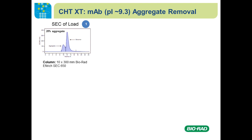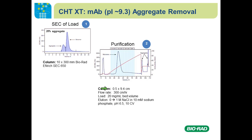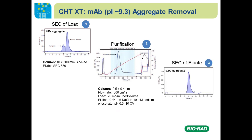In the first CHT XT case study — aggregate removal — an HPLC-SEC of a monoclonal antibody off protein A shows aggregates representing about 28% of the total mass. On the chromatogram, a sodium chloride gradient elutes the monomer at around 250–300 mM sodium chloride, while aggregates come out in the strip. Collecting that monomer peak shows greater than 99% monomer purity with only 0.1% aggregates remaining — a 280-fold reduction — with about 70% yield.